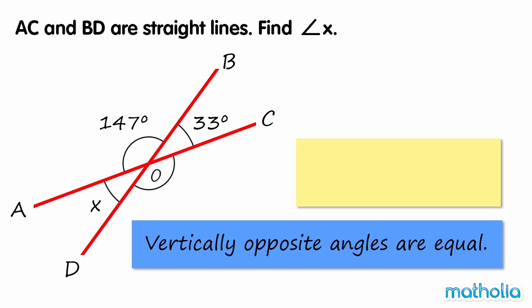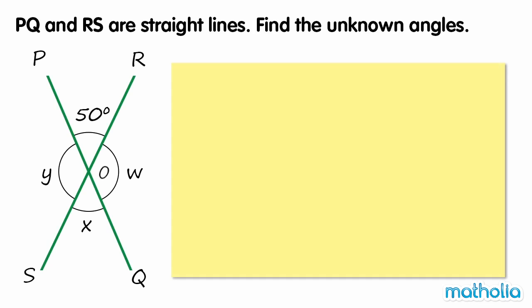AC and BD are straight lines. Find angle X. Recall that vertically opposite angles are equal. Angle X is vertically opposite to angle BOC, which is equal to 33 degrees, so angle X is equal to 33 degrees.